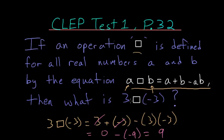So the answer to our question, what is 3□(-3), based on the definition of this operation □, is 9.